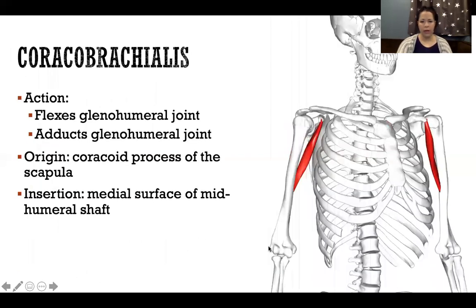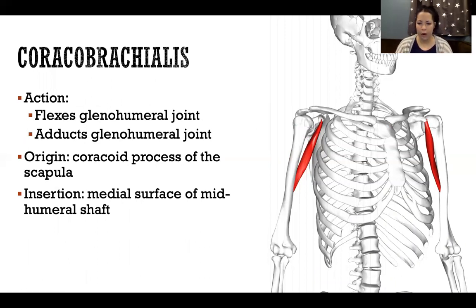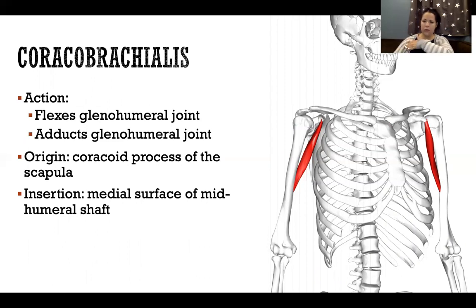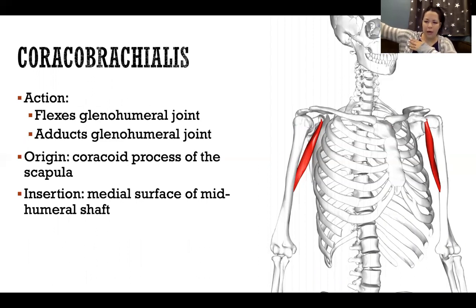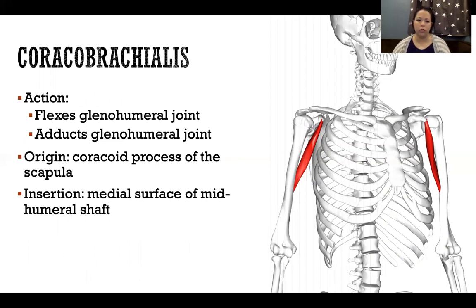Coracobrachialis is a small muscle on the anterior part of the shoulder. Because it's in the anterior part, its primary action is flexion, but if the arm is abducted it will also contribute to adduction of the glenohumeral joint.